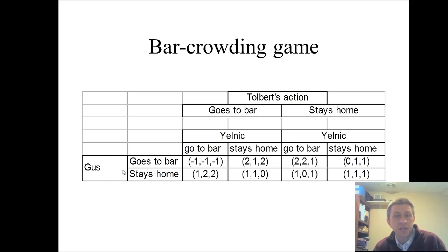So with Gus and Jelnick, this would be player one, this would be player two. If it was only a two-player game, this would be the extent of the game, these four outcomes. Gus could go to the bar, so could Jelnick. Gus could stay home, so could Jelnick. But we also have Tolbert in there, and Tolbert could go to the bar or stay home as well.